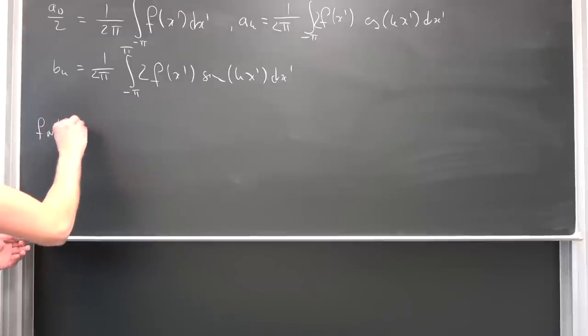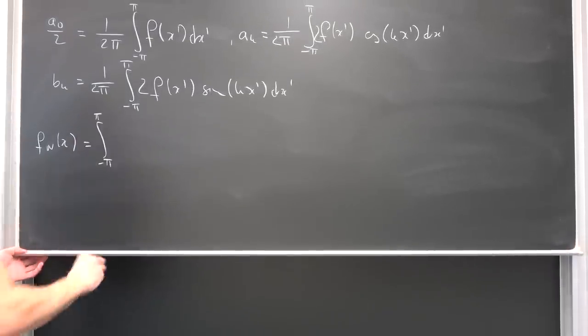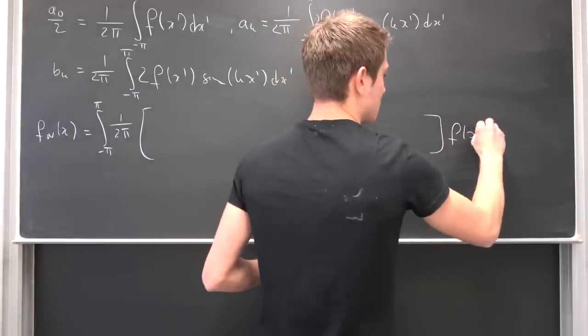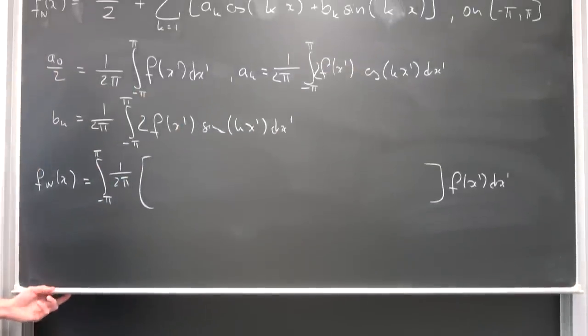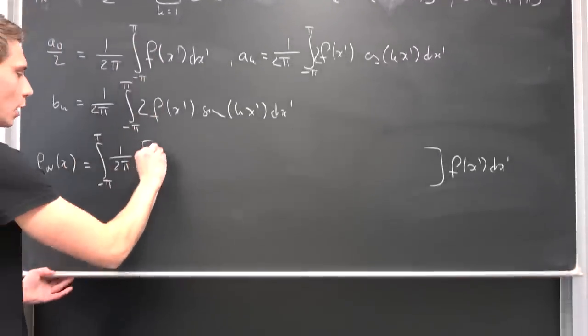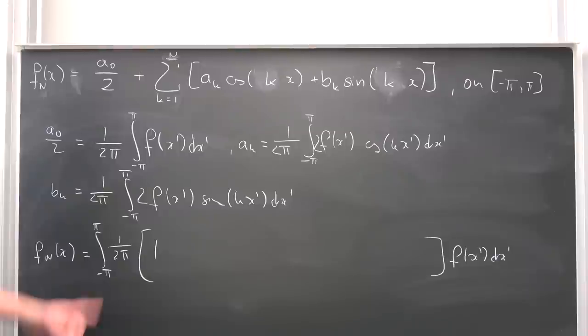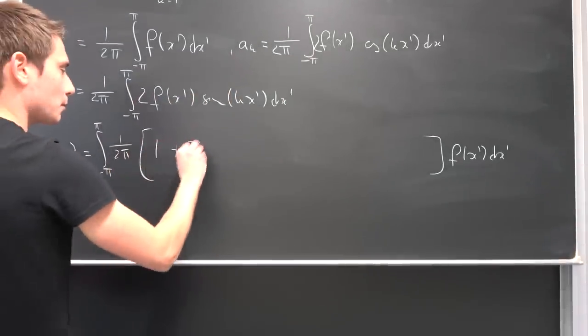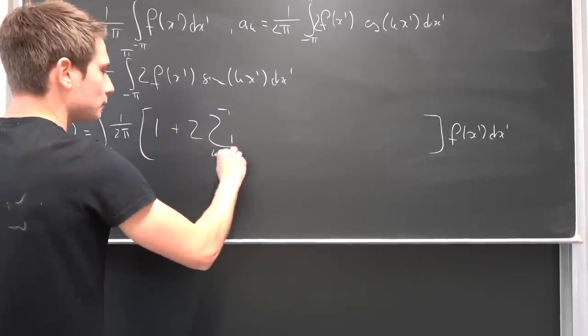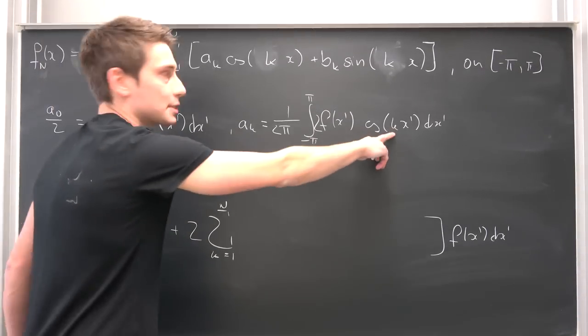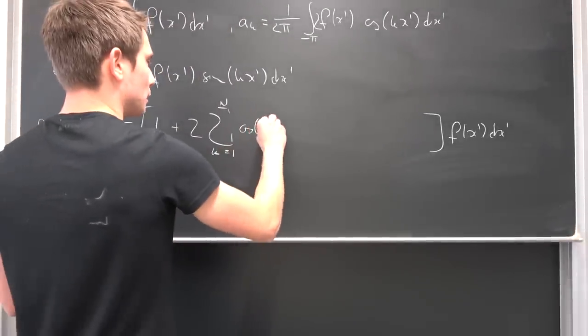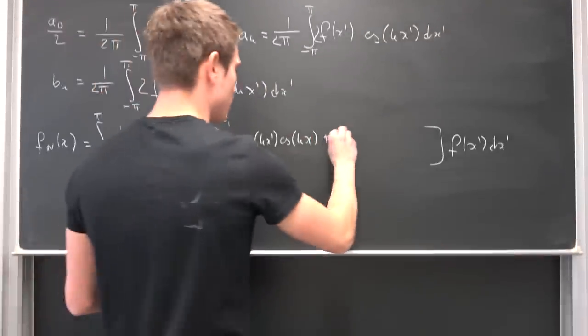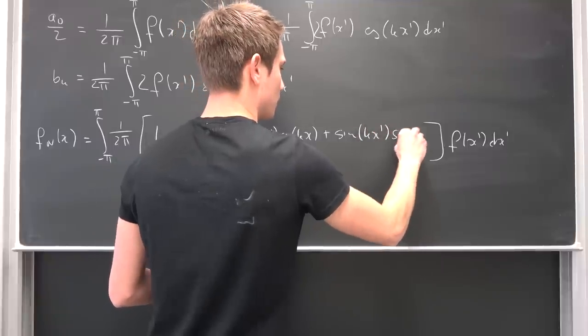And now we can just add those integrals together. So f approximated to a certain degree is now nothing but the integral from negative pi to pi of 1 over 2 times pi, a common factor, times something big with f of x prime at the end, integrated with respect to x prime. What do we have at first if we factor out f of x prime? This is just going to give us a 1. But what else do we have? Well, now we have plus the sum of all those. But you see a common factor is the 2, so why not bring the 2 to the outside plus 2 times the sum running from k equals 1 to capital N of the cosine of k times x prime times the cosine of k times x, and then we have plus the sine of k times x prime times the sine of k times x.